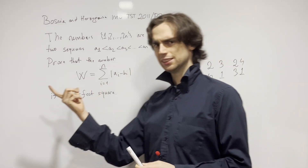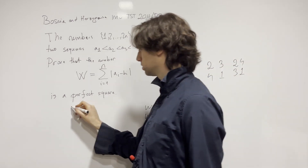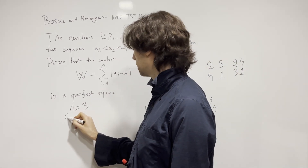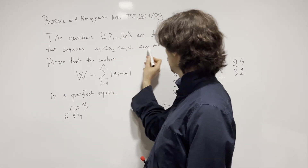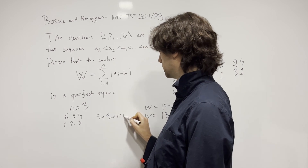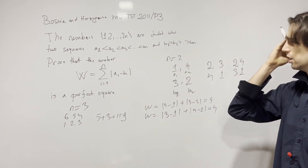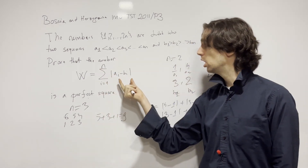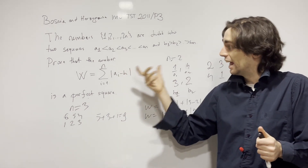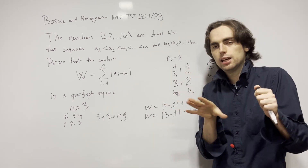So is W always the same? Maybe that's a hypothesis. n=2 is a little small — there could be edge cases. What about n=3? For n=3 with the decreasing sequence 6,5,4 and increasing sequence 1,2,3, we get W = 5 + 3 + 1 = 9. We're getting n squared in all of these cases, which is in line with expectation.